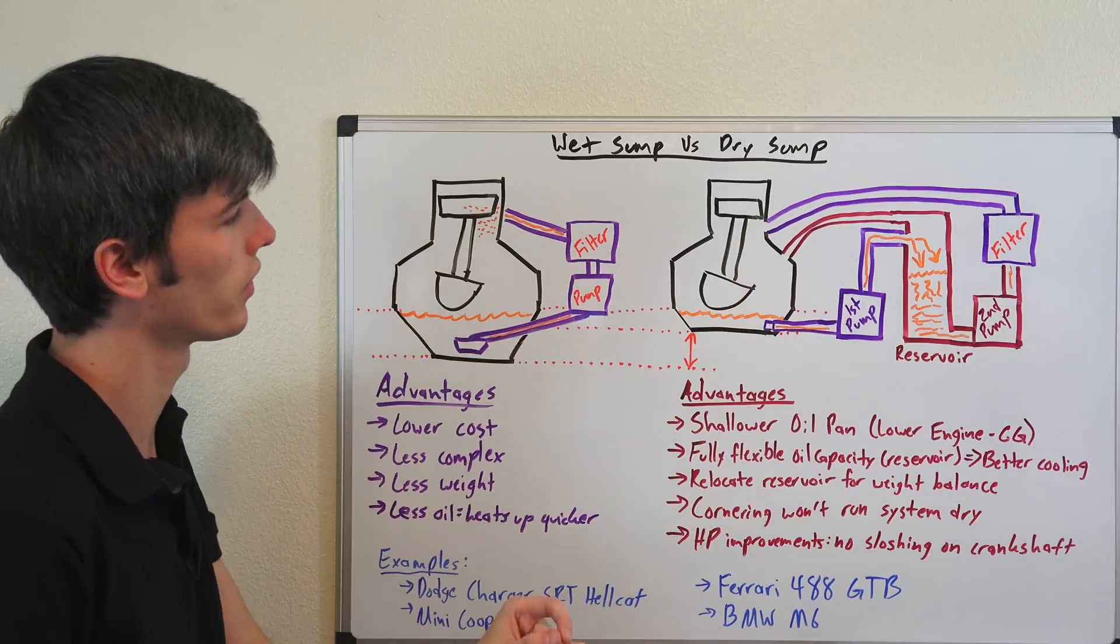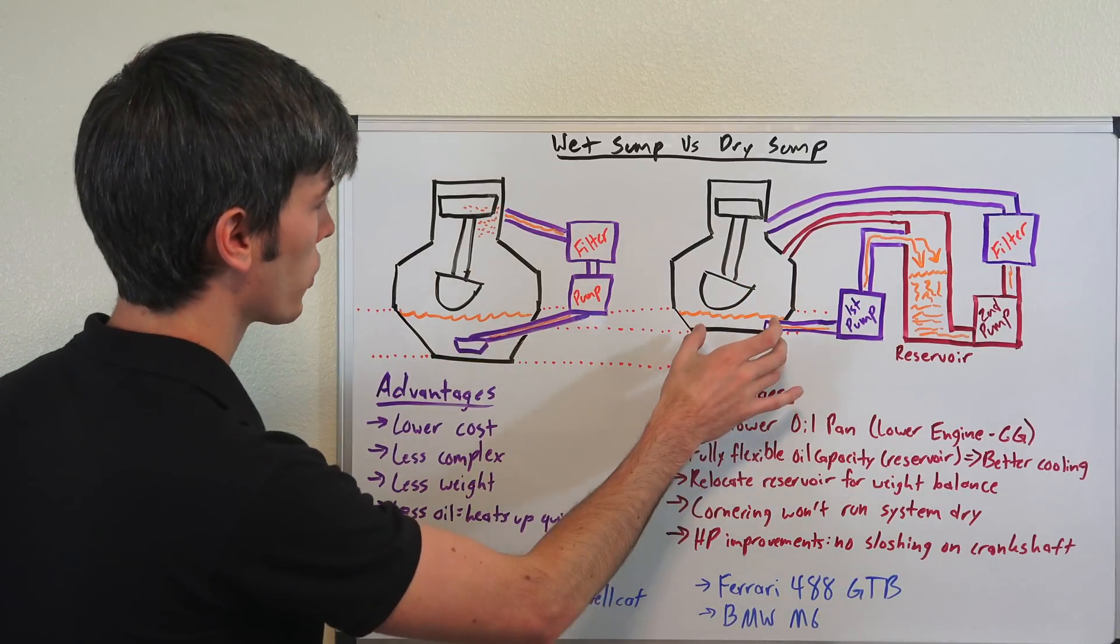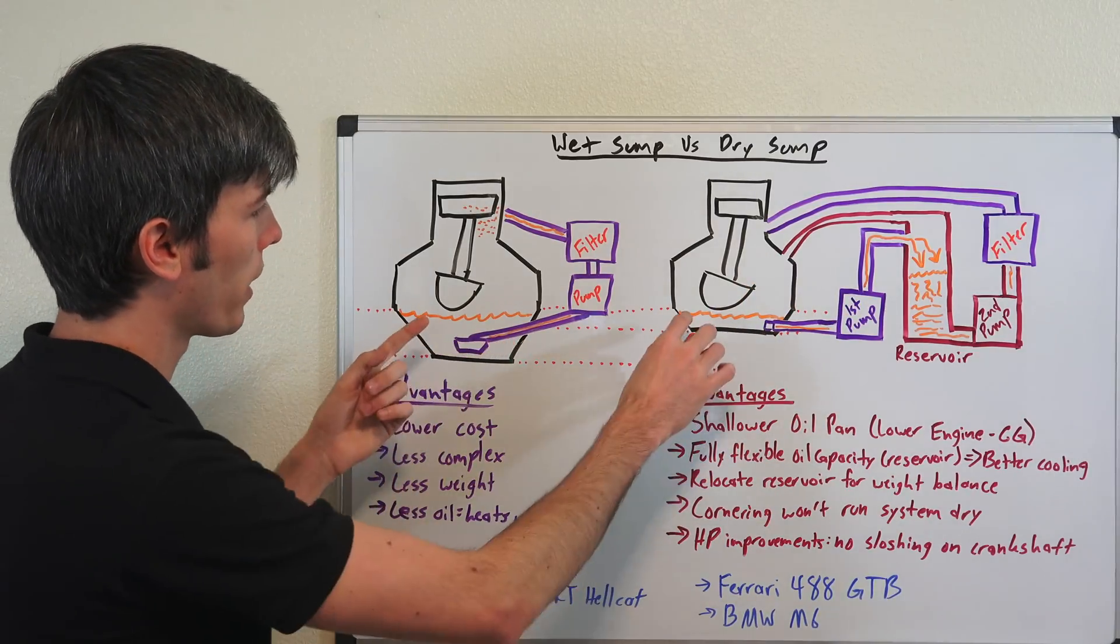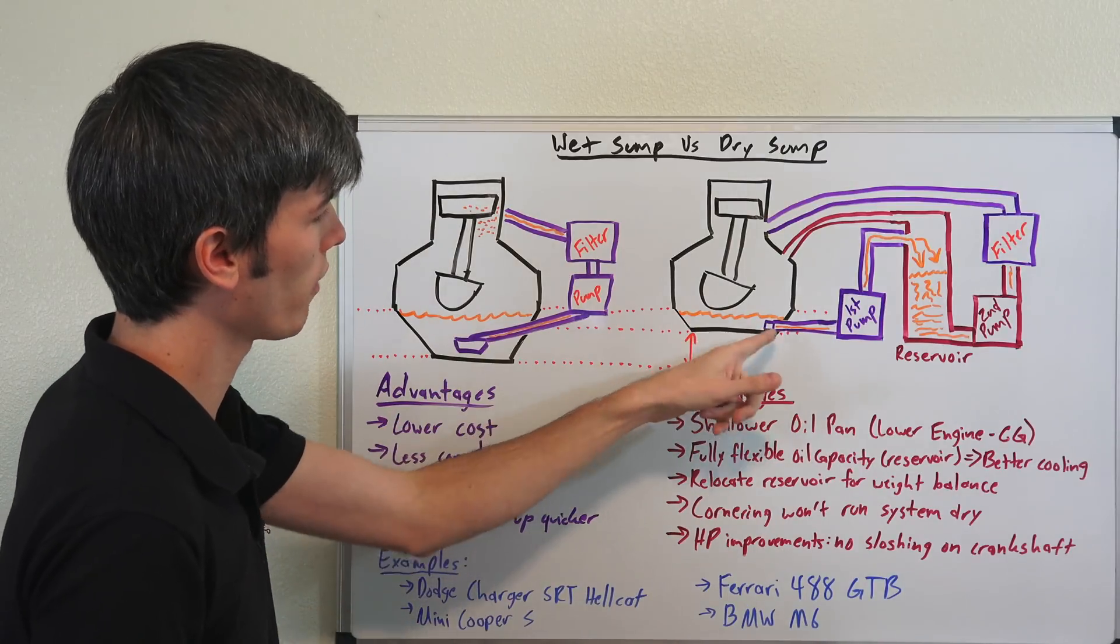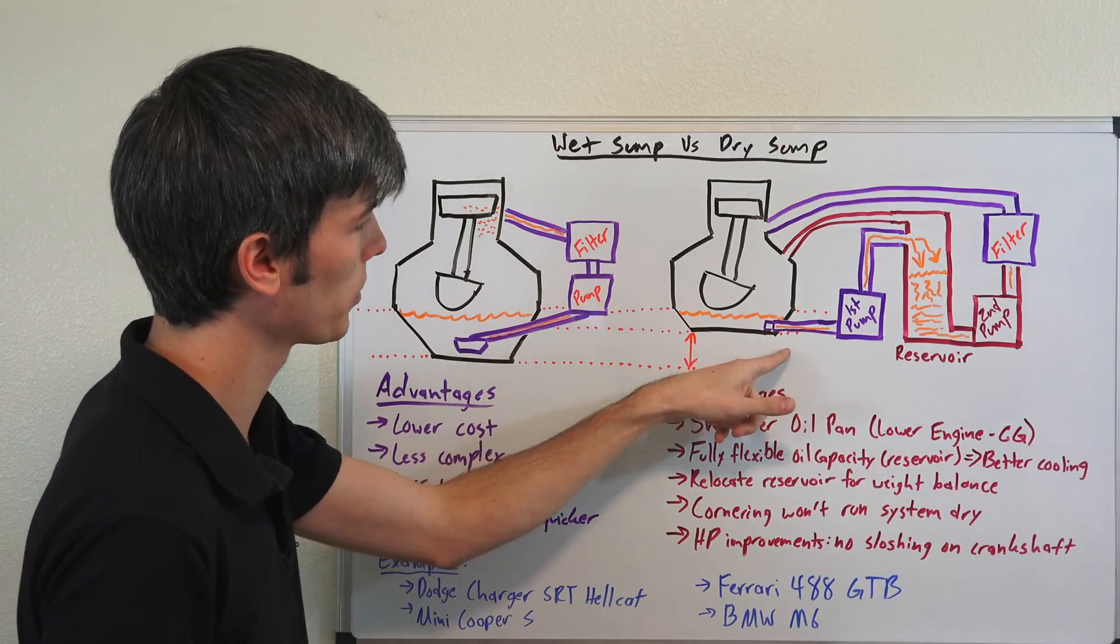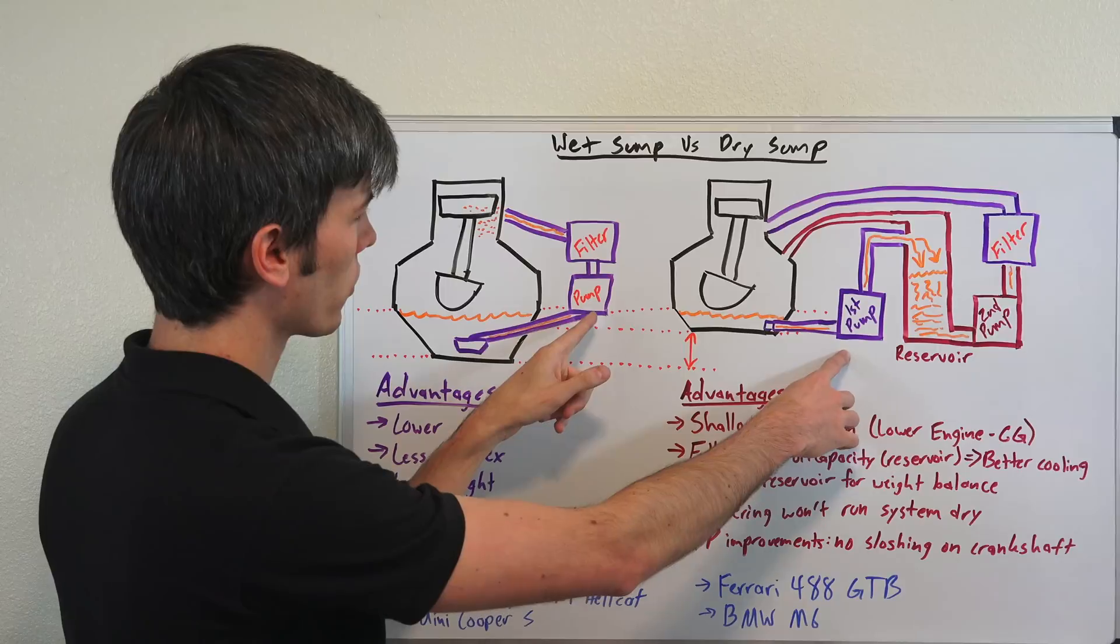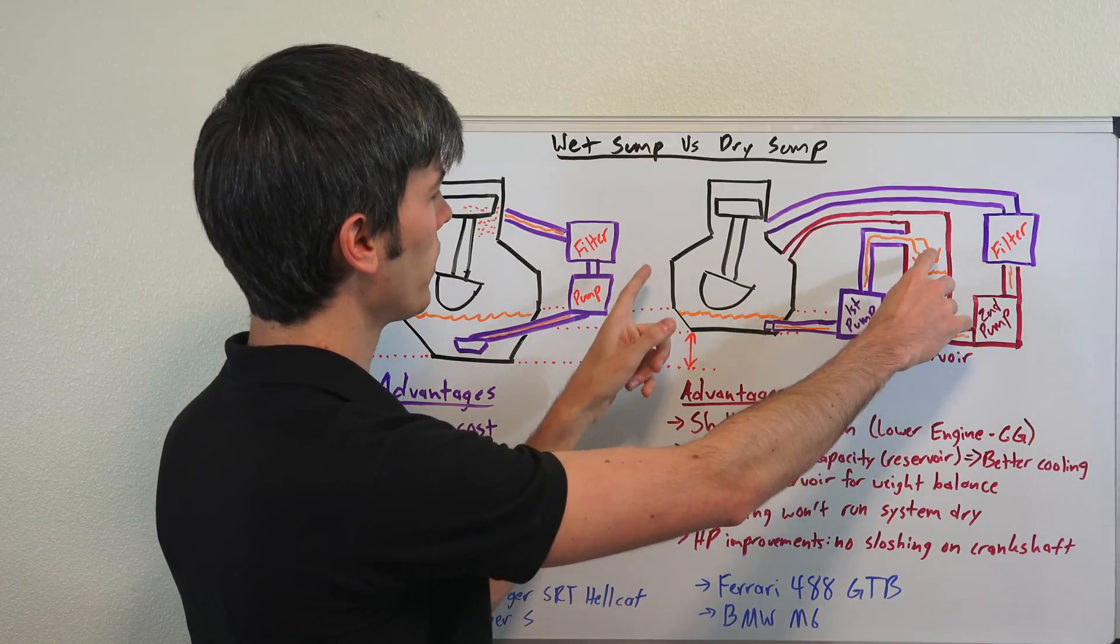Now on a dry sump system, what you'll have is a much shorter, much shallower oil pan right there. You'll have a pickup feed right there down at the bottom, and you could have multiple of these in dry sump systems. That's going to go to that first pump just like in our original one. The difference is now it's going to send that oil into a reservoir.